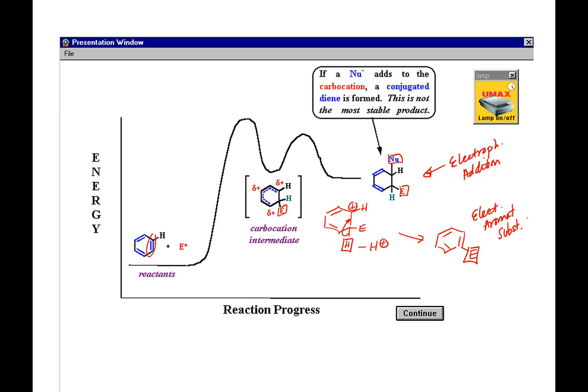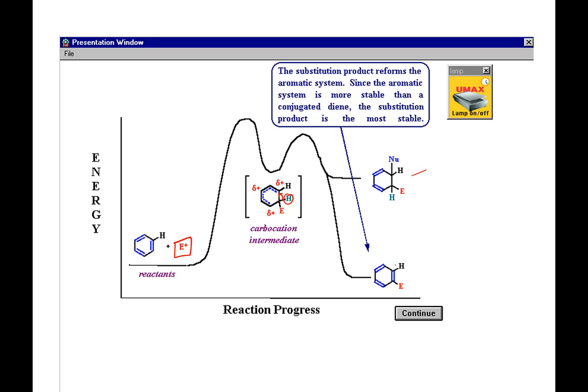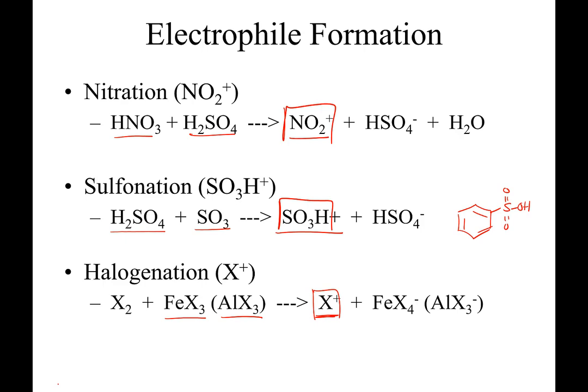If this was all random, we'd just move on. But as you've hopefully figured out so far, there's really not a lot of random stuff in organic — there is a system we have to figure out. Reforming that conjugated system is the reason for substitution versus addition. So let's generate some E+ to add to the ring.